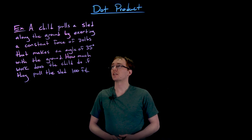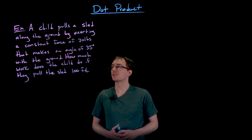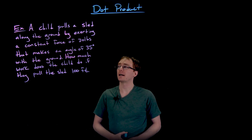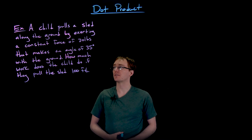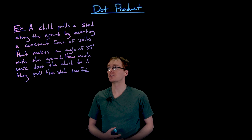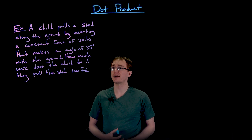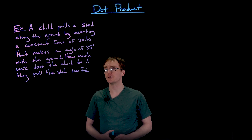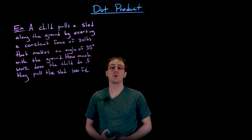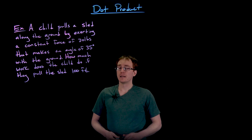Hello everyone. In this example we're told a child pulls a sled along the ground by exerting a constant force of 30 pounds that makes an angle of 35 degrees with the ground. How much work does the child do if they pull the sled 100 feet?